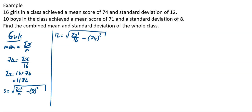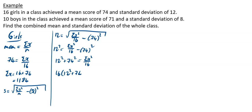We need to reverse-process this. First, square both sides: 12 squared equals sigma x squared over 16, minus 74 squared. Bring that across: 12 squared plus 74 squared equals sigma x squared over 16. Then multiply both sides by 16. Putting that into the calculator gives sigma x squared equal to 89,920.